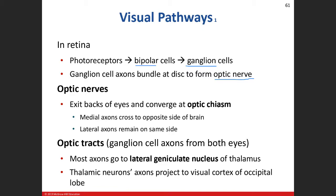The ganglion cells form the optic nerve — cranial nerve II. An easy way to remember: optic nerve, two eyes; olfactory nerve, one nose. All those ganglion axons converge at the optic disc to form the optic nerve. Here's the back side of the eye: one optic nerve from the left eye, another from the right eye, and they converge at what we call the optic chiasm — the pituitary gland sits right above it.